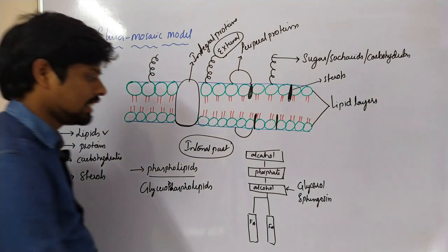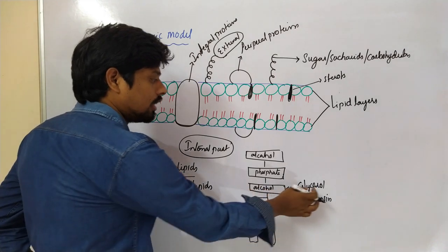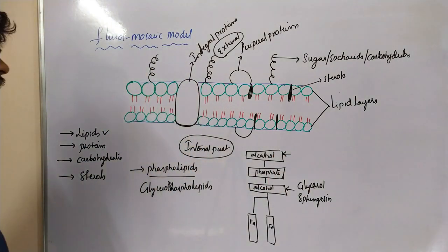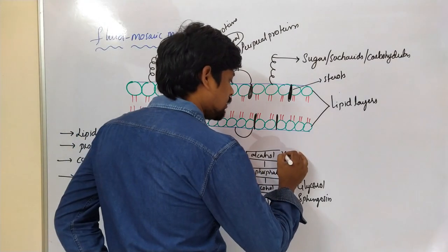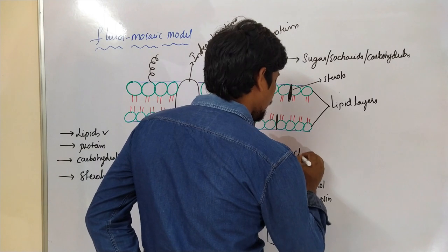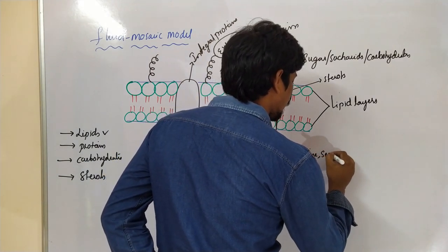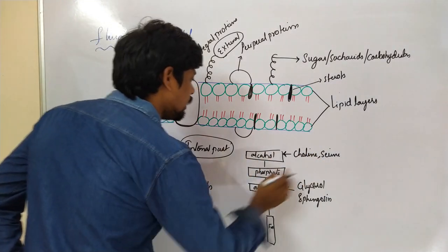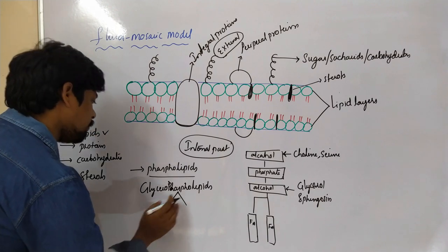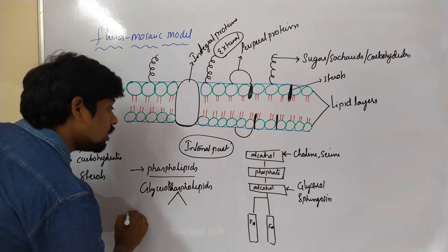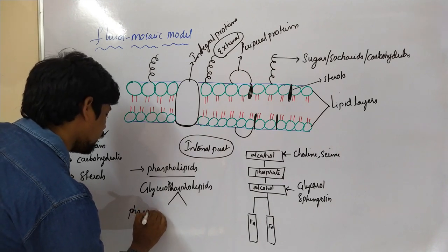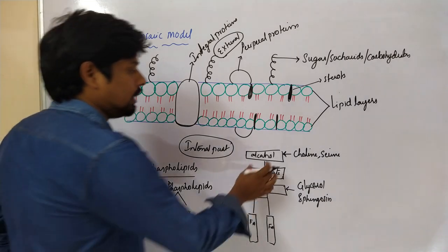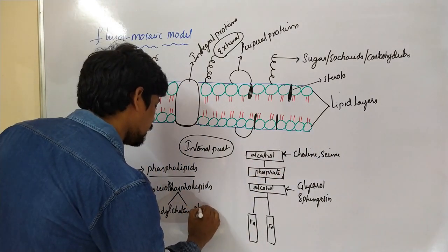In glycerophospholipids, the alcohol position is replaced by alcoholic moieties such as choline and serine. If choline is present, the glycerophospholipid is called phosphatidylcholine. If the alcohol is replaced by serine, it is called phosphatidylserine.